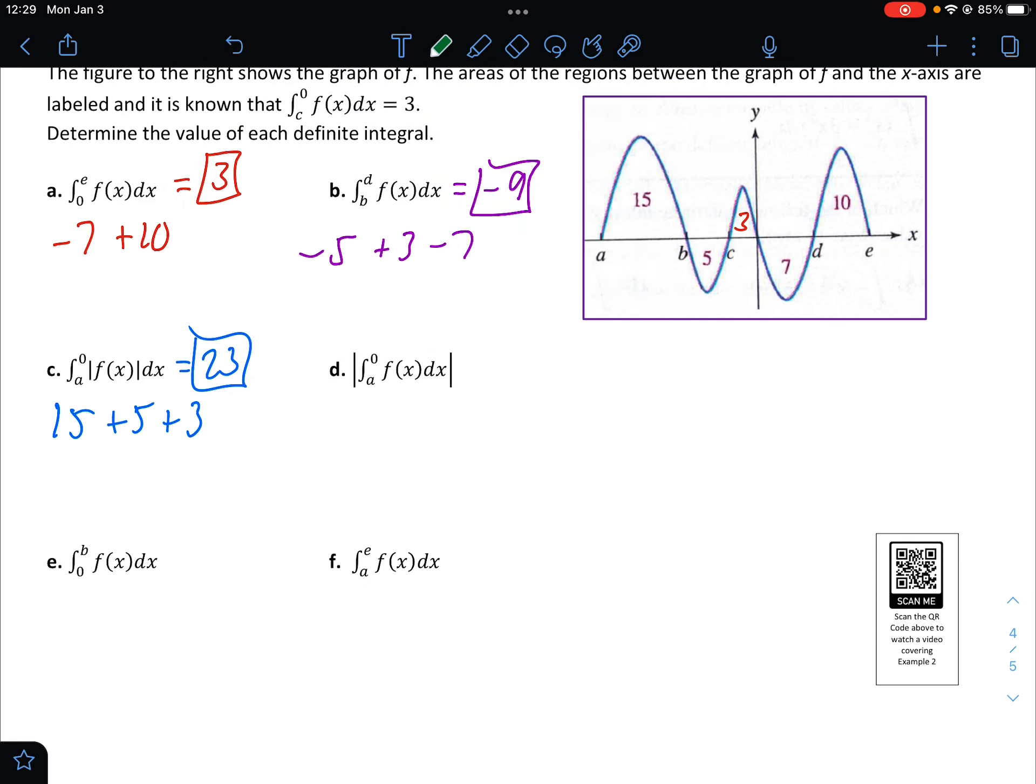D says the absolute value of the integral from a to 0. So this time, we don't flip anything over. We're doing the integral from a to 0, then we'll take the absolute value of that. So that would be the absolute value of 15 minus 5 plus 3. So that would be 18 minus 5, which is 13. Absolute value of that would be 13. So big deal here to understand the difference between question C and question D. Question C says we're going to take the absolute value of every individual area, but question D says we're going to take the absolute value of the ending area when we're done adding them all together.